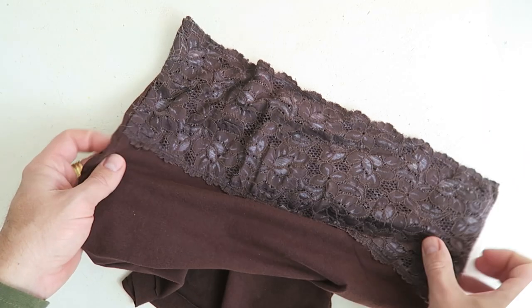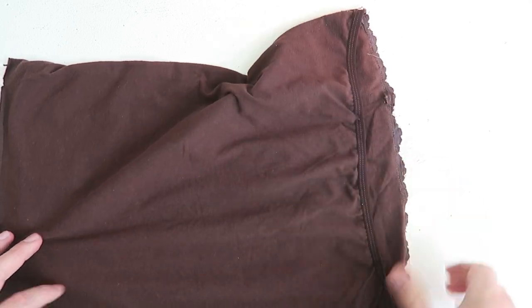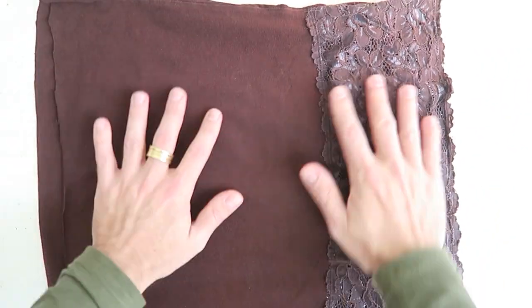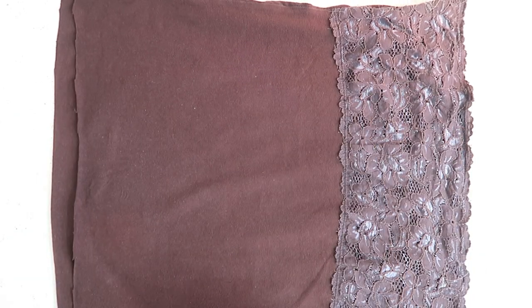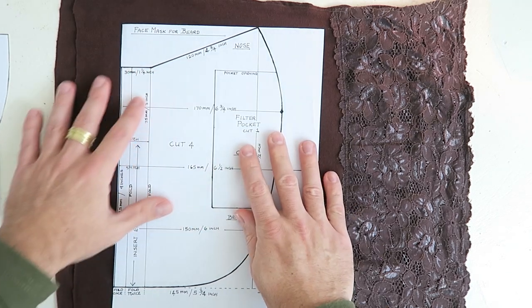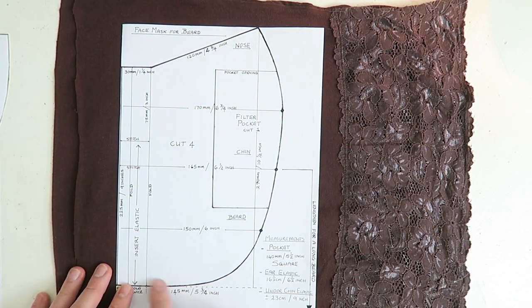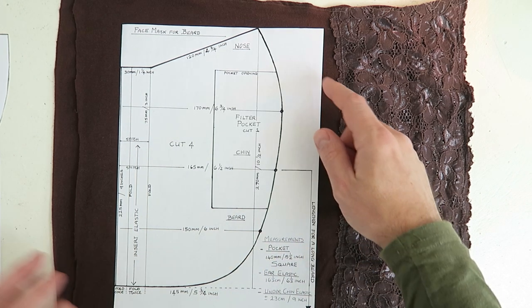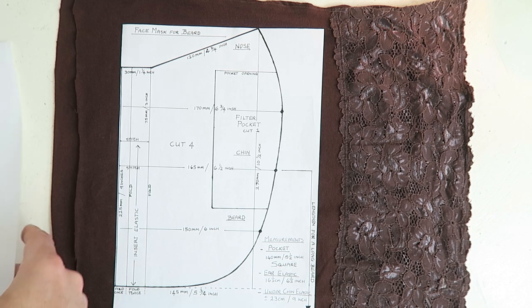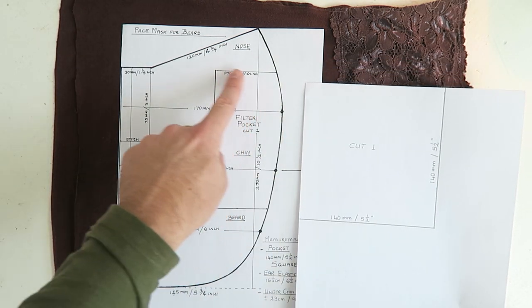Now for this beard face mask we've basically just used a top, a woman's top that we found. It is made out of cotton and that's important, try to use cotton where you can. The pattern that we have in PDF form that you can download off our blog is to scale. This is the exact size of the pattern. This is the filter pocket. All the measurements on the pattern are clearly marked in centimeters and in inches.